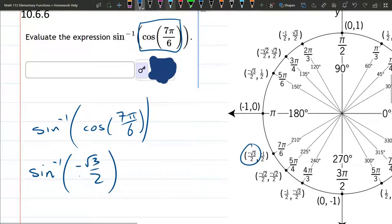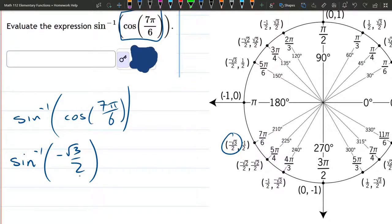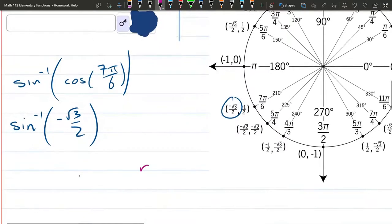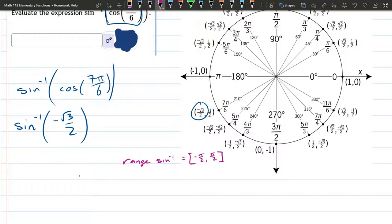I'm going to switch colors now because we need to think in a slightly different way. You might be thinking it should just be this angle right here. Well, no, for two reasons. Sine inverse, the range of sine inverse is negative π over 2 to positive π over 2. So our answer has to be between negative π over 2 and positive π over 2. The second reason is because we want to know what angle has a sine value of negative square root 3 over 2.